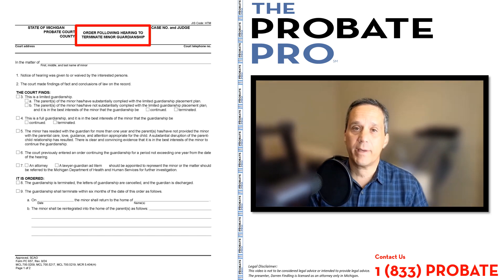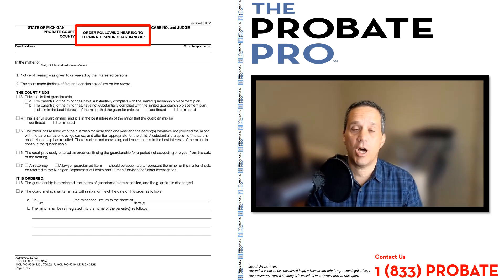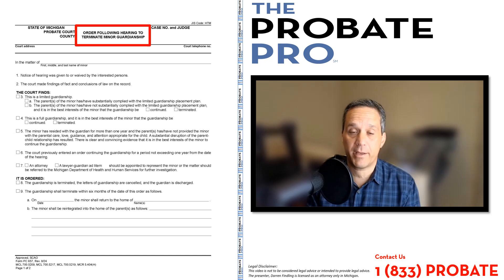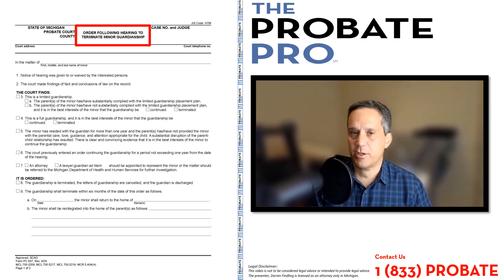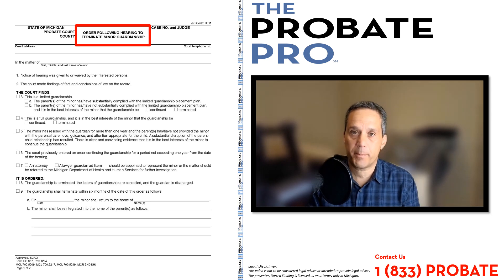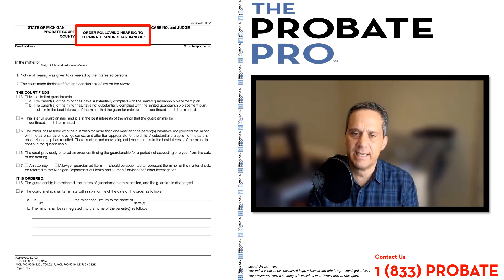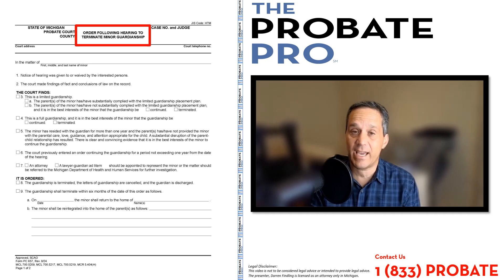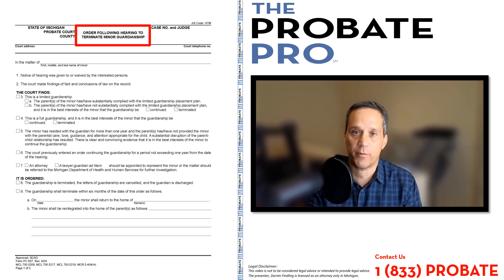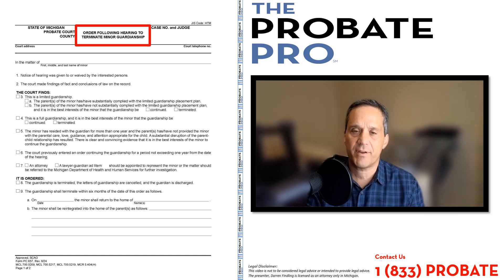The order following a hearing on a termination of a guardianship for a minor. Hi, I'm Darren Finling of the Probate Pro, and we're going to go over PC 657. This is a SCAO form — State Court Administrative Office form for the State of Michigan — PC for Probate Court, Form 657.